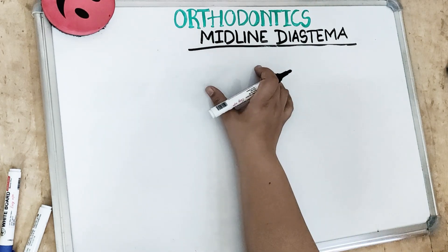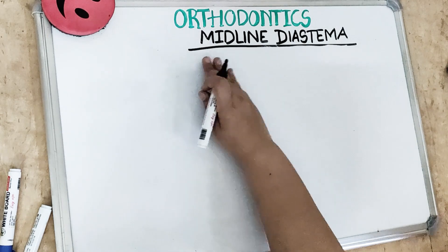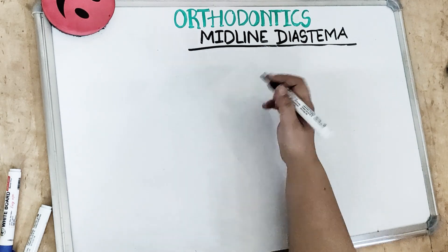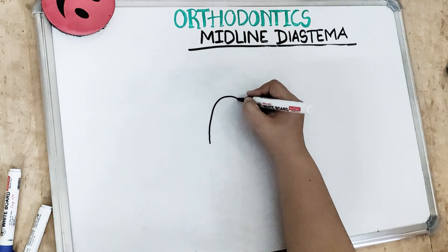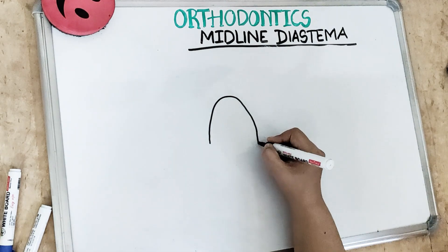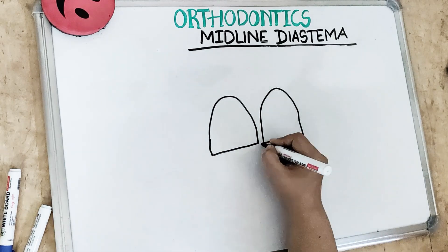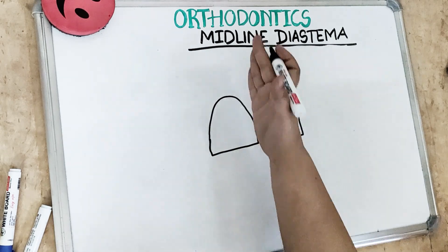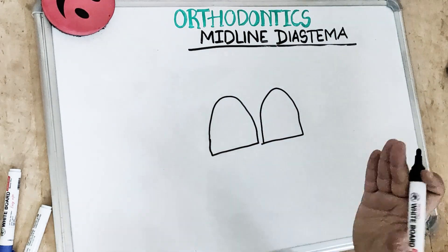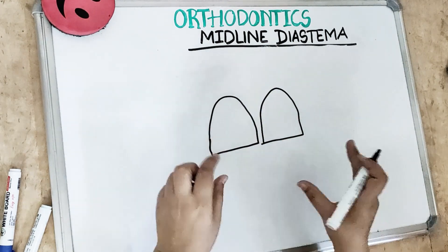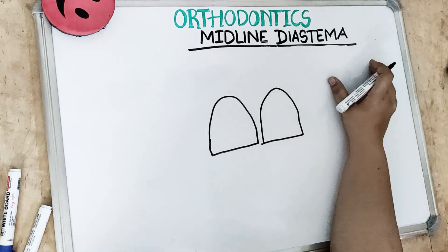This malocclusion is present with Class 1 malocclusion. There is a spacing present in the midline, between the two maxillary central incisors. So this anterior midline spacing present between the two central incisors is the midline diastema.